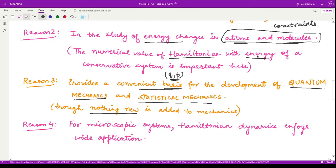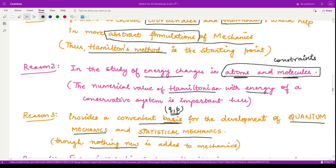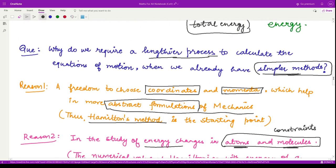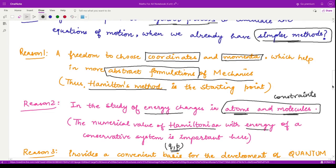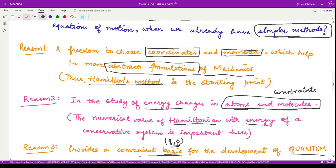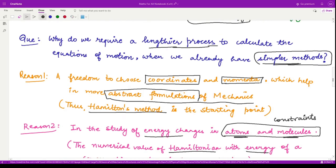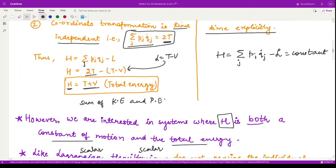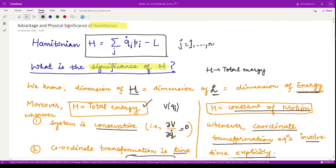For microscopic systems, this Hamiltonian dynamics enjoys wide application. It has huge application when you want to see applications either from the quantum side in atoms or molecules or from the statistical mechanics. There you can formulate abstractly different problems and solve them. This technique of Lagrangian and Hamiltonian comes out to be really handy. I hope I convinced you for using this Hamiltonian approach.